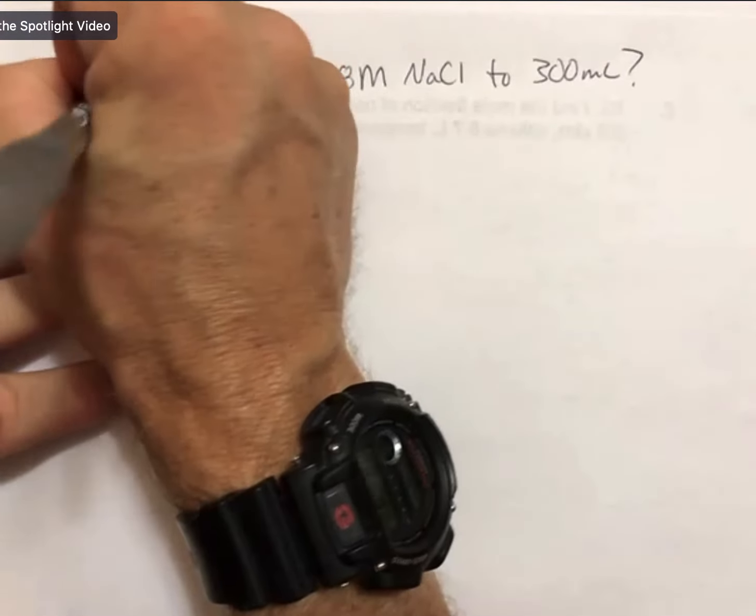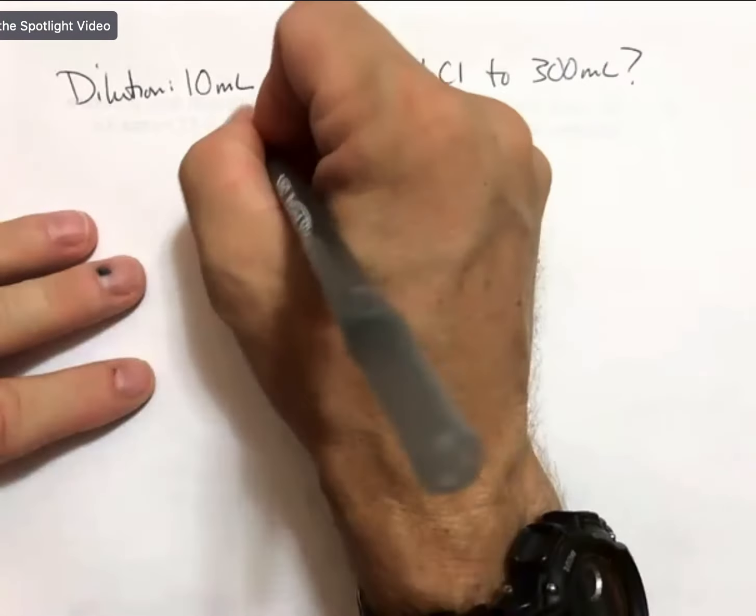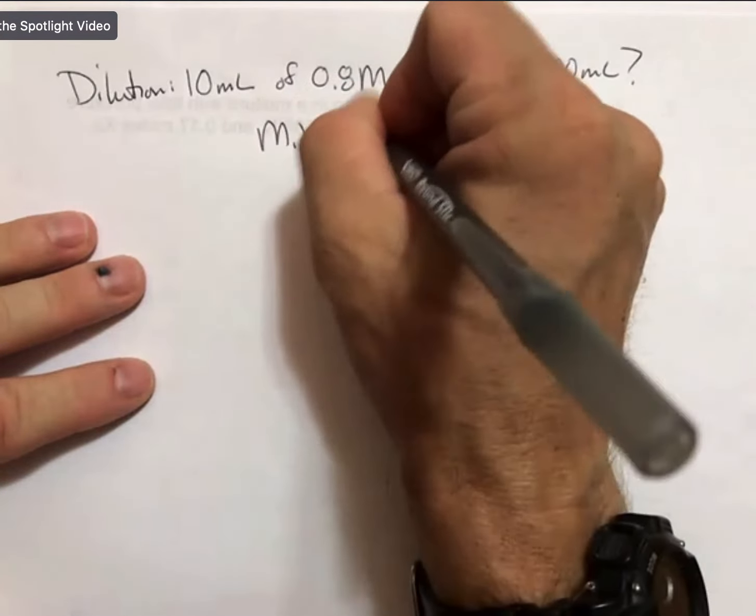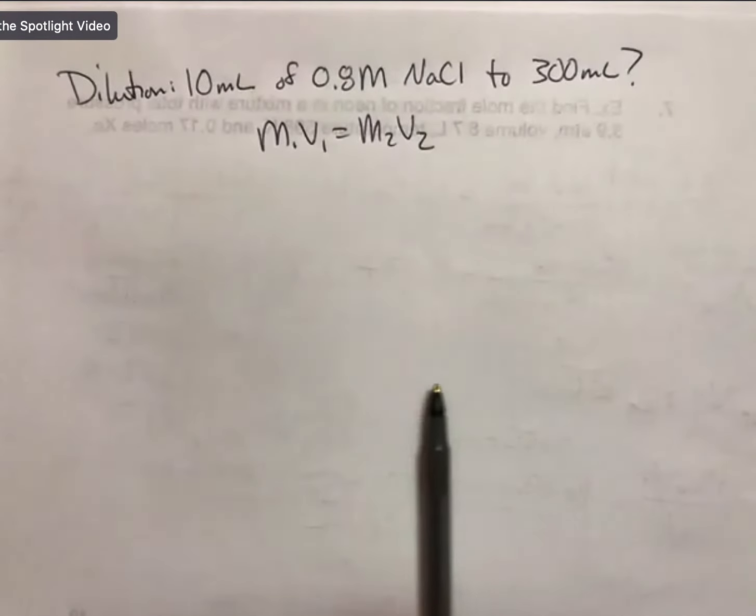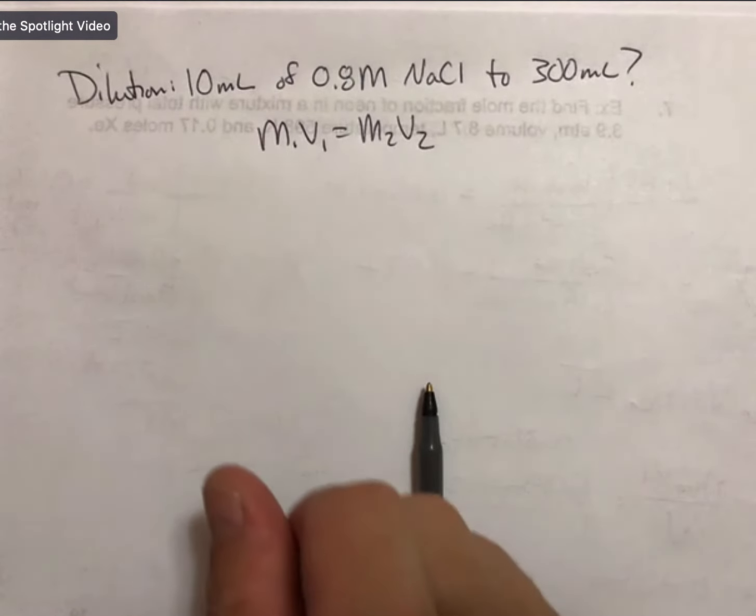This is a dilution problem. For dilution, the formula is M1V1 equals M2V2. The dilution formula is on your conversion and equation sheets.